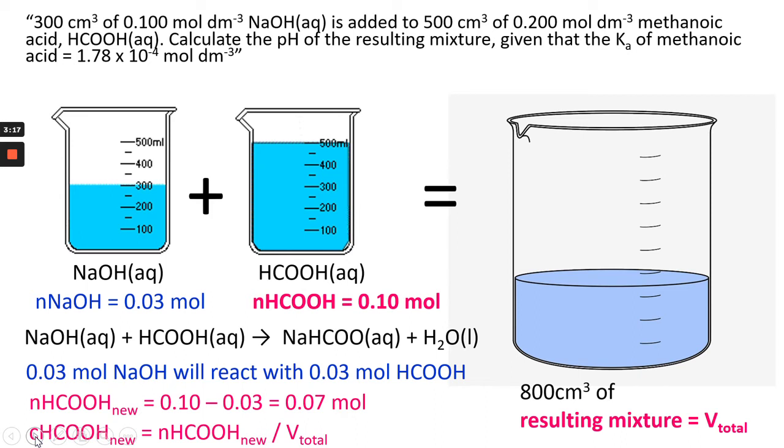So the concentration of HCOOH is going to be the number of moles of HCOOH left over over the total volume, which is the combined 800 cm cubed. So that gives us 0.0875.